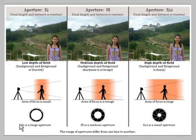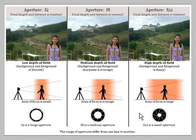The easiest way to remember this is that small F numbers create small depth of field — you can see the background is out of focus while the subject is in focus. The opposite is also true: a large F number will create large or deep depth of field. You need to choose which aperture number to use in order to get the depth of field you require for your image.